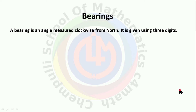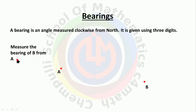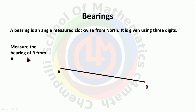Let's check one example. I have taken two points, A and B. We need to find the bearing of B from A. To measure the bearing of B from A, the first step is to join the two points A and B.